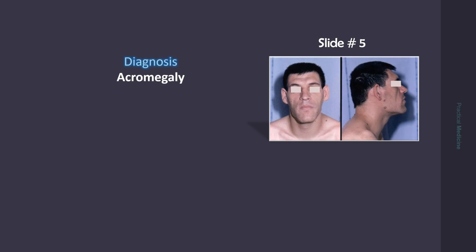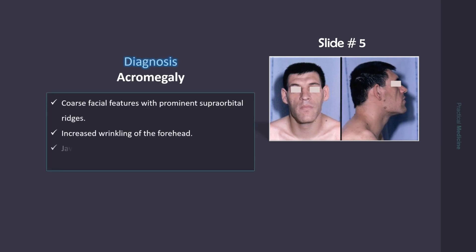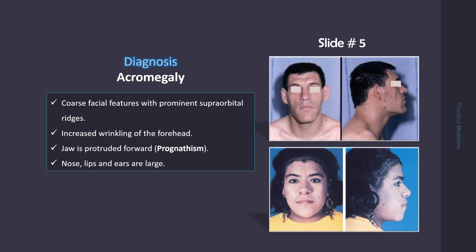You are seeing acromegaly in this slide. There are coarse facial features with prominent supraorbital ridges. There is increased wrinkling of the forehead. The jaw is protruded forward, which is known as prognathism. The nose, lips, and ears are large.